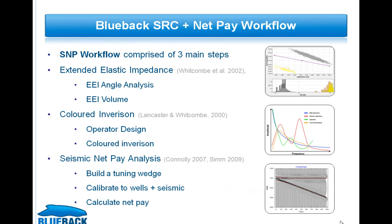The SMP workflow takes into account any tuning effects which may alter the apparent reservoir thickness and is comprised of three key building blocks. First, Extended Elastic Impedance, which involves plotting acoustic impedance and gradient impedance from well data on a log-log plot and finding the angle of projection that gives maximum separation between pay and non-pay facies. Second, Coloured Inversion, which uses the seismic spectra of the EEI reflectivity volume and the earth spectra of the EEI logs to create a band-limited impedance volume. Third, seismic net pay analysis, which allows for detuning the band-limited impedance volume, calibrating by tying to well or seismic data, and calculating net pay by multiplying by the apparent thickness isopack.